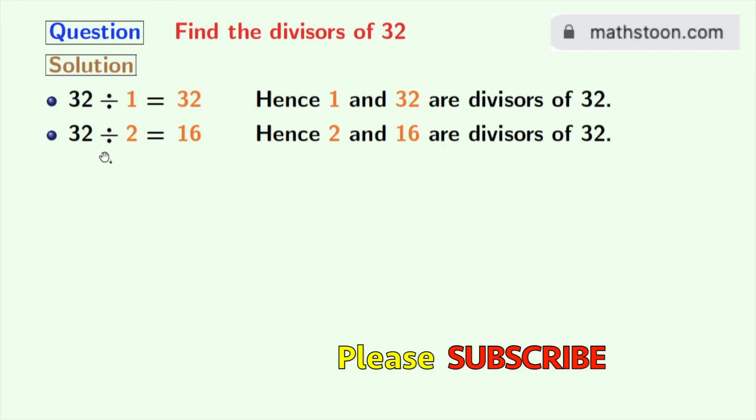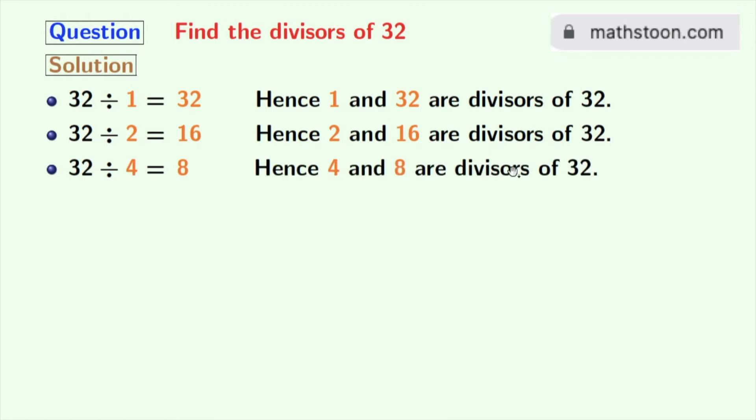Next number 3 does not divide 32. So, we will try for 4. 32 divided by 4 is 8. So, 4 and 8 are the divisors of 32.